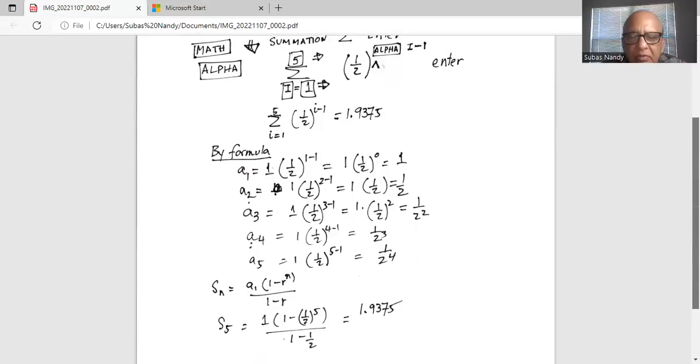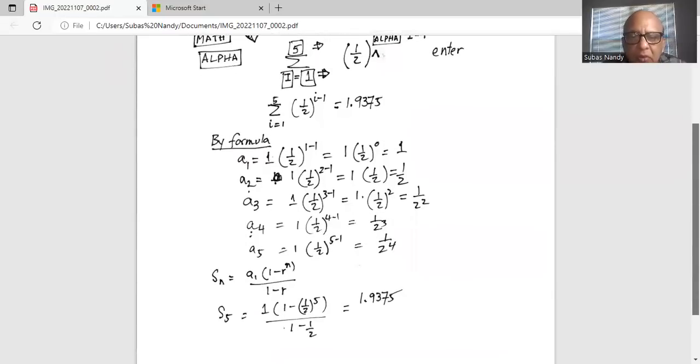So my summation SN equal to A1 times 1 minus R to the power of N divided by 1 minus R. Now common ratio here is half and the first term A1 is 1.